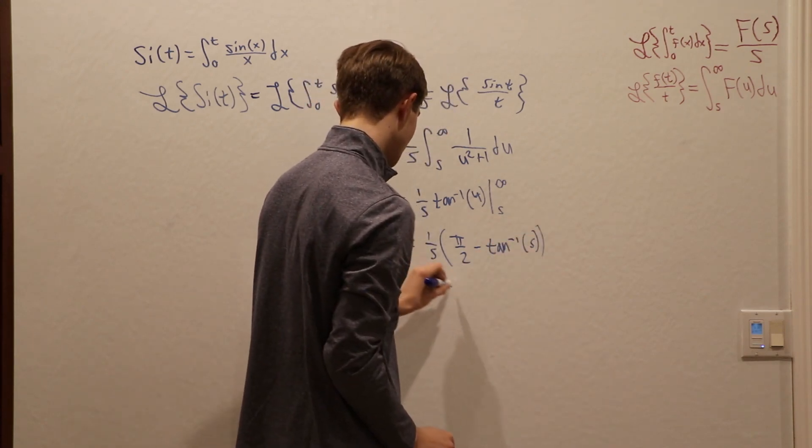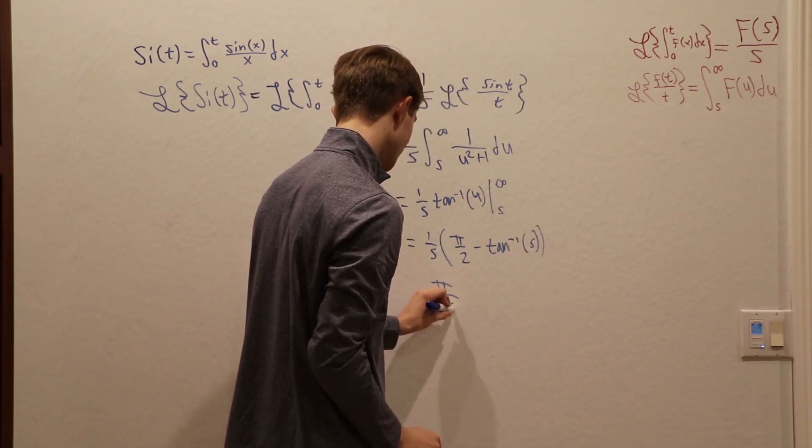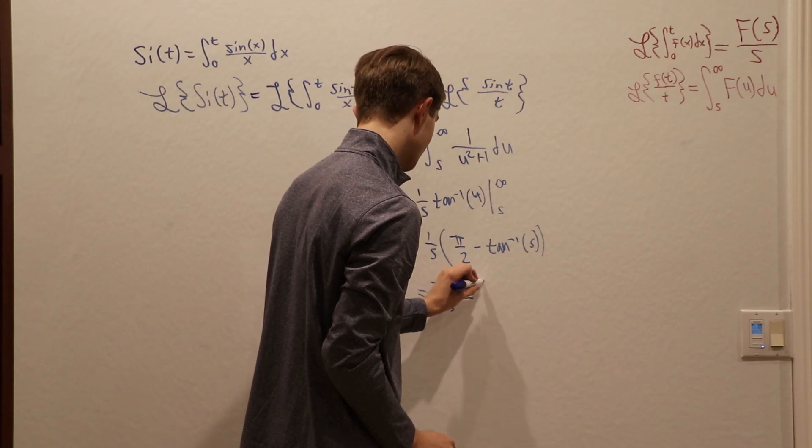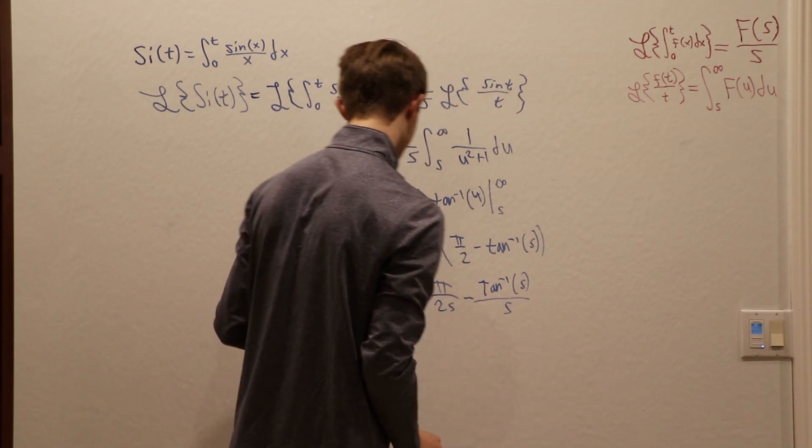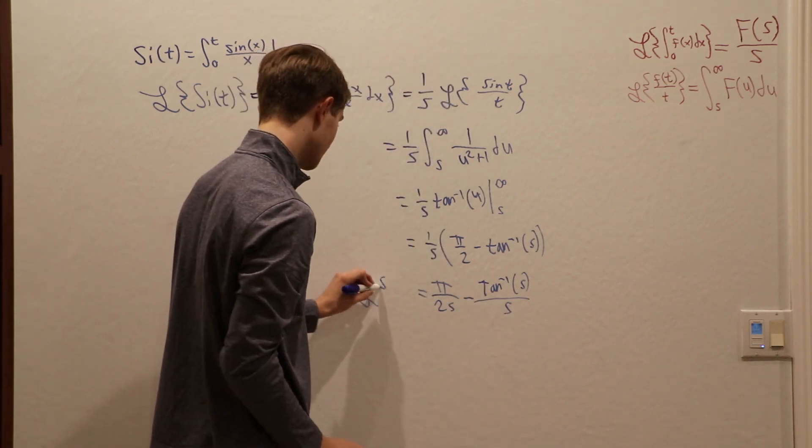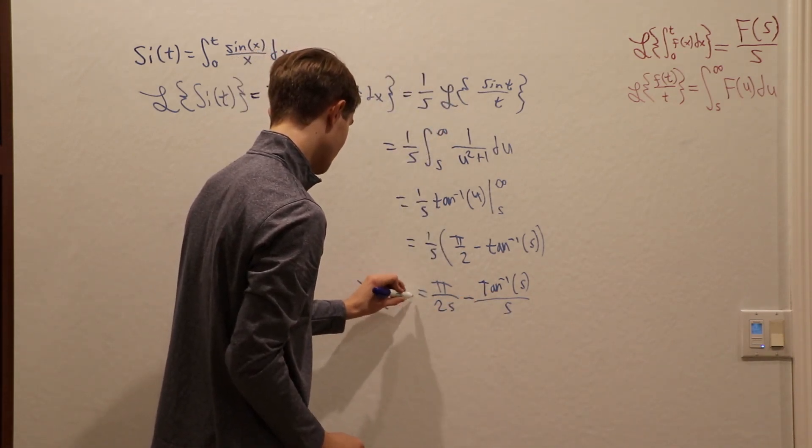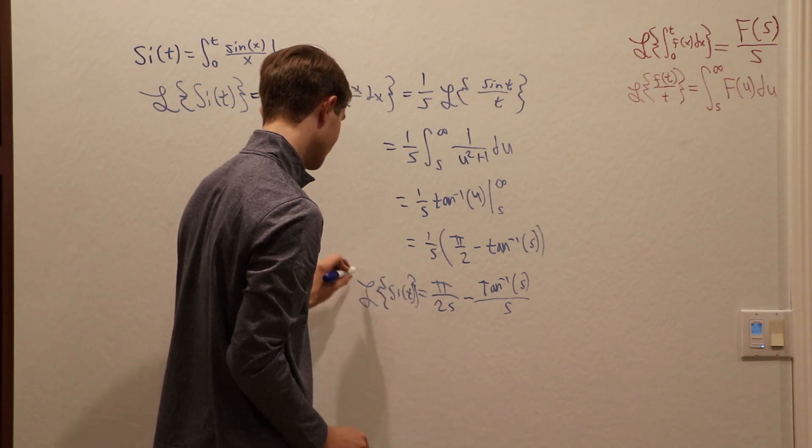So expanding this out, we get pi over 2s minus the tangent inverse of s divided by s. That is the Laplace transform of the sine integral of t.